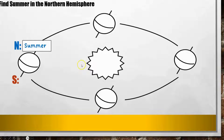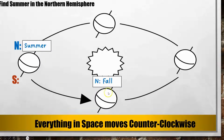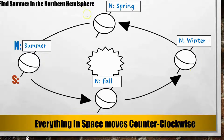Everything in space, for the sake of our class, goes counterclockwise — opposite of the clock. So we're going to go in order and label our seasons counterclockwise. First I have summer, then fall in the northern hemisphere, then continuing counterclockwise we have winter in the northern hemisphere, and then we have spring in the northern hemisphere.